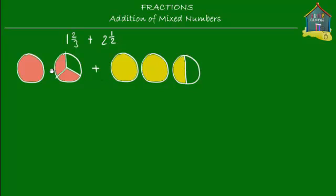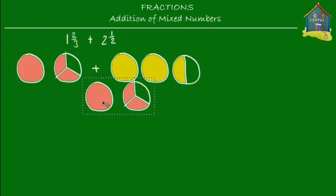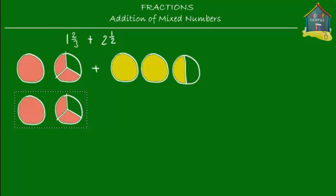We have one and two-thirds of pepperoni pizza and two and a half of cheese pizzas, and we want to add them up to find the total. It's a little confusing because you have whole pizzas and sliced pizzas, so let's slice up everything. We take the pepperoni pizzas and cut them up — since the other pepperoni pizza is cut into three slices, we cut the whole pizza into three slices as well.